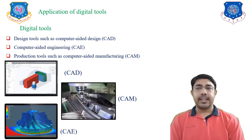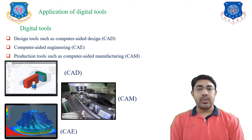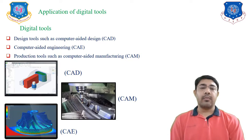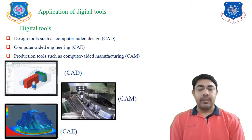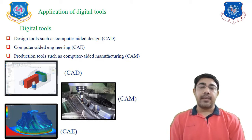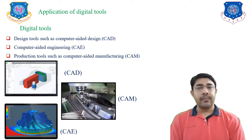Let's start our lecture with applications of digital tools. The digital tools used for product design and manufacturing are: first, design tools such as computer-aided design (CAD), which assists the design process using 3D feature-based modeling, assembly of components, and surface modeling.